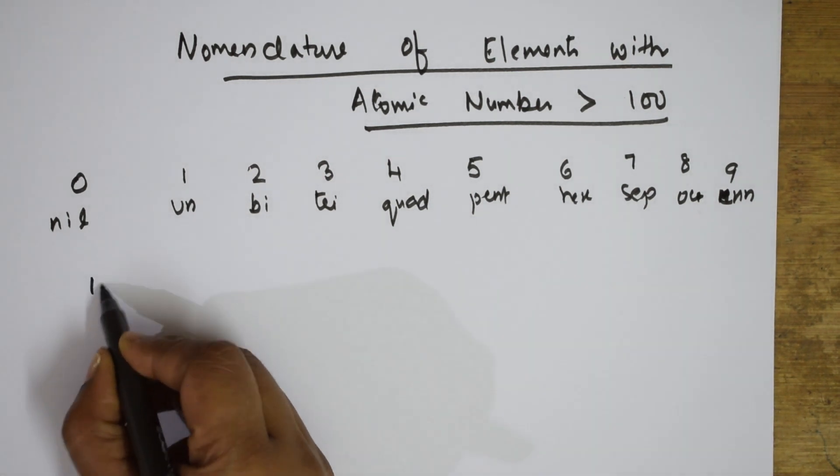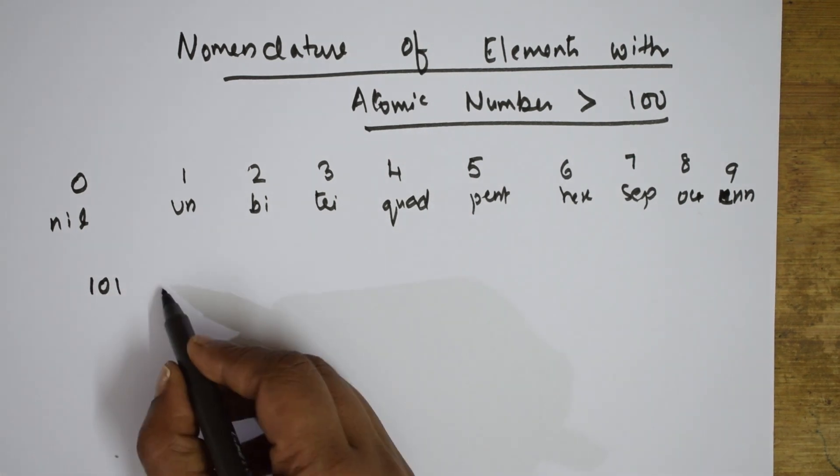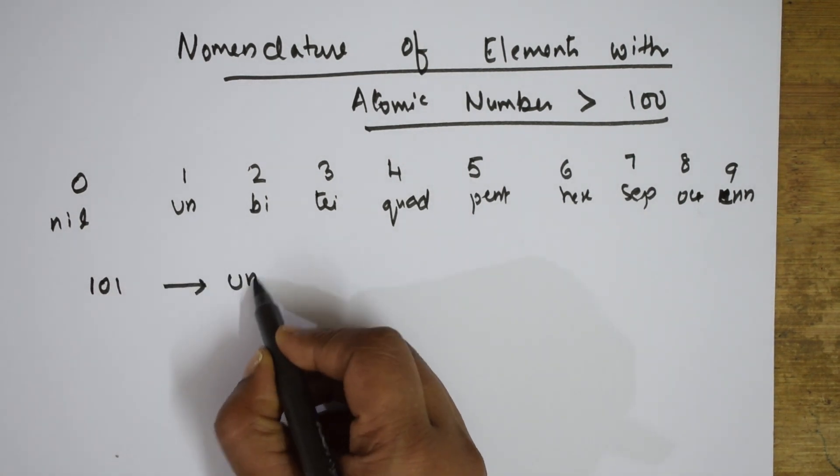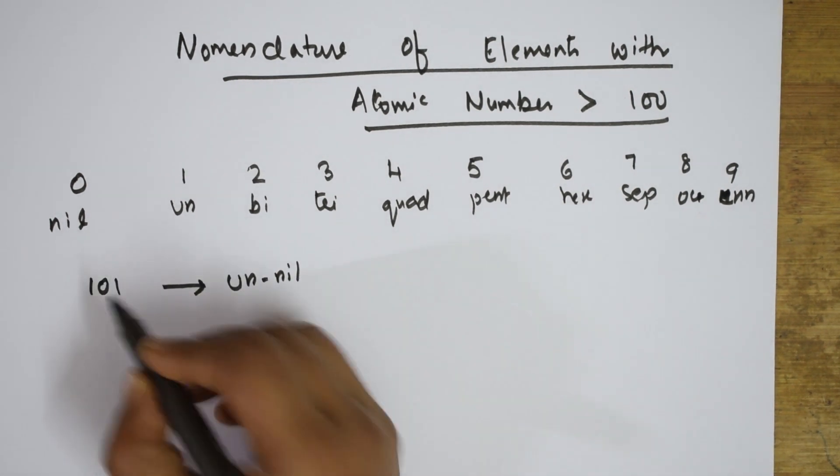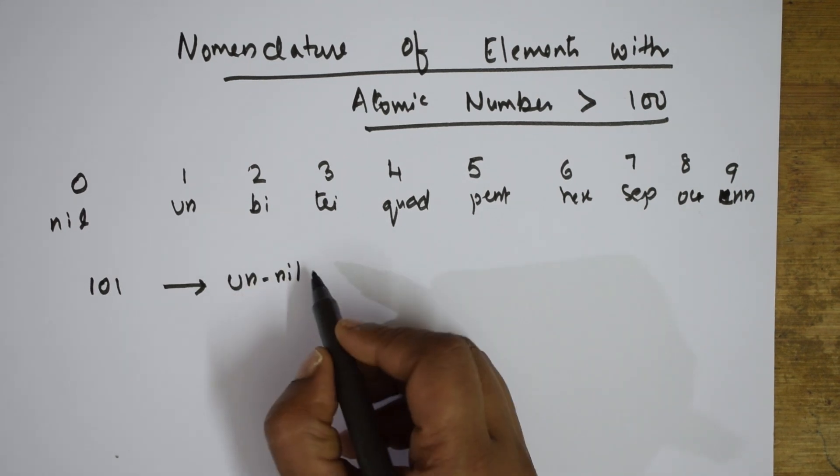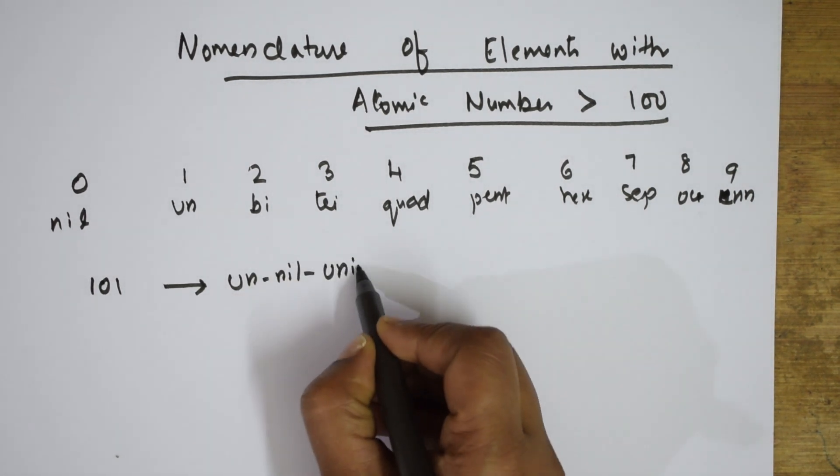Suppose if I have atomic number 101, how will I name this? I name this as un-nil-unium. Nil is for 0, un is for 1.